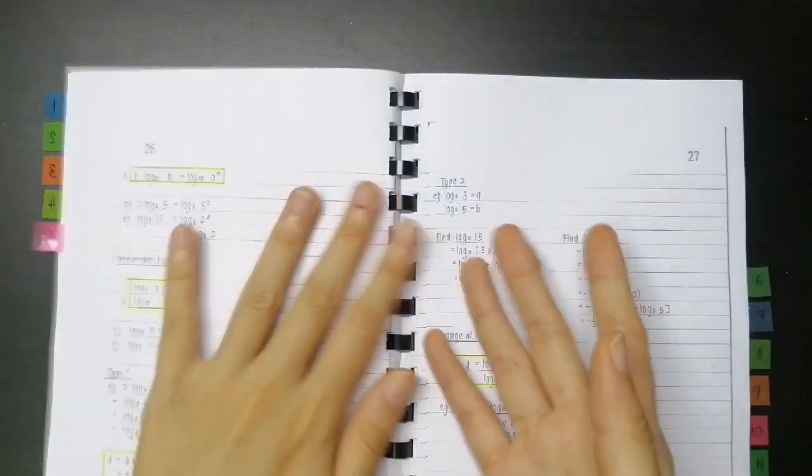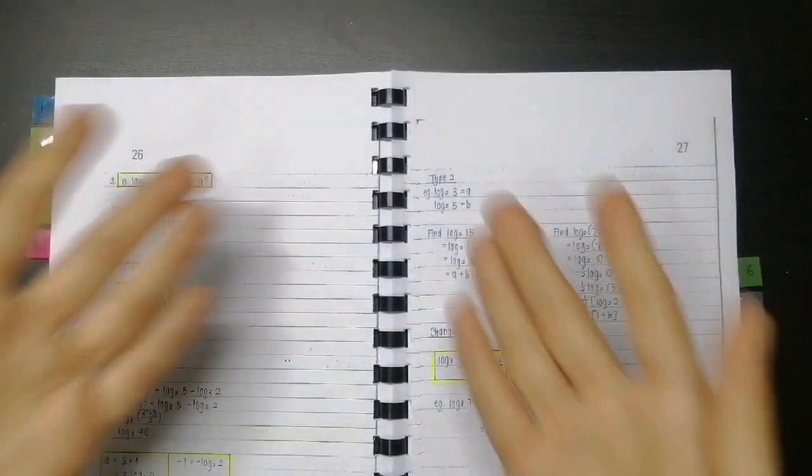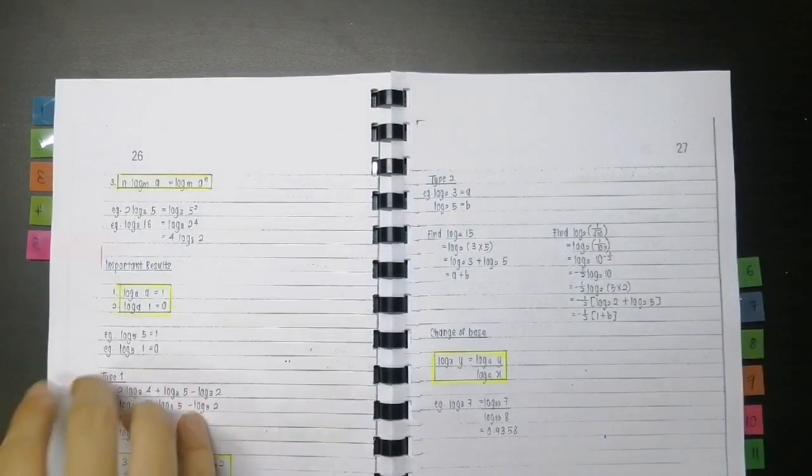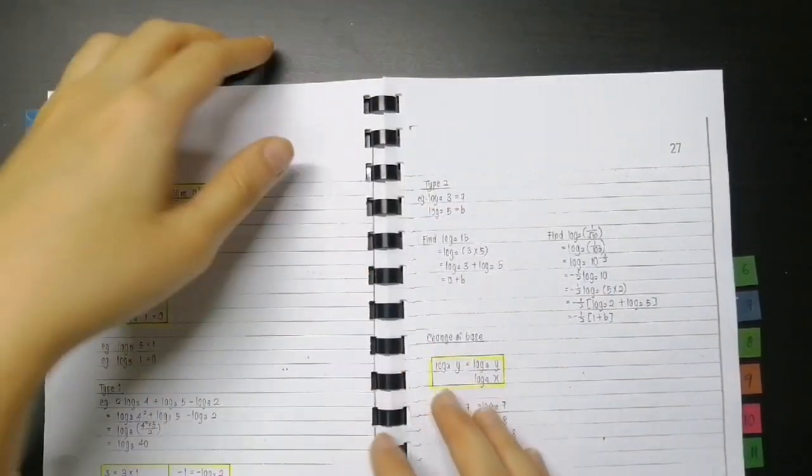And then I put comb binding here so it's easy to flip through and the book can lay out flat like this. For me, I love it when the book can lay out flat, so that's why I chose to put comb binding.